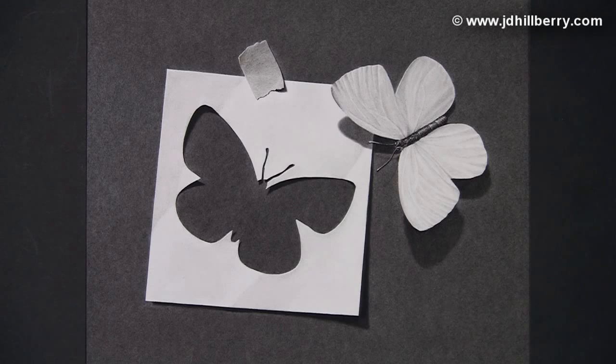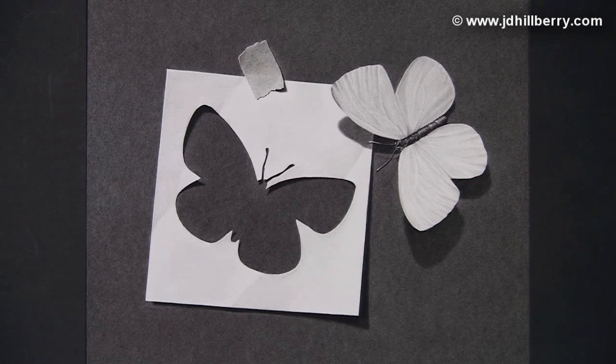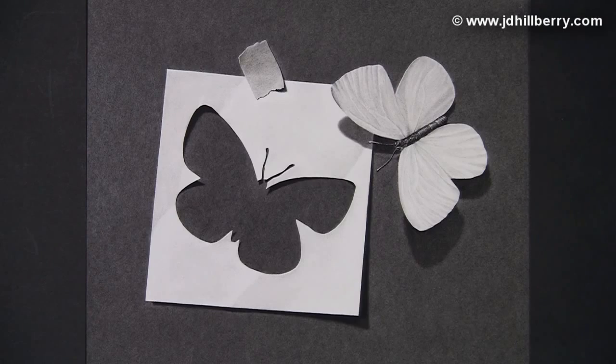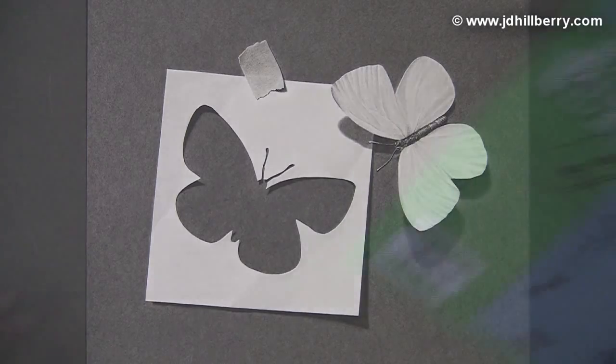This drawing incorporates the use of frisket, which is a masking technique I use to keep white areas white while I'm rendering darker backgrounds. So here are the shapes of the butterfly and the piece of paper with the cutout are masked off before I start on the background.